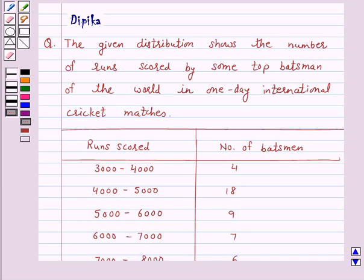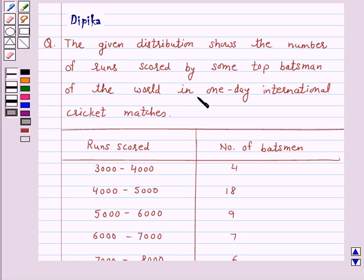Hello and welcome to the session. I am Deepika here. Let's discuss a question which says: the given distribution shows the number of runs scored by the top batsmen of the world in one day international cricket matches.